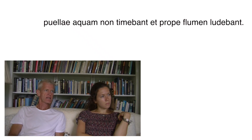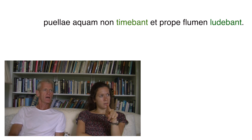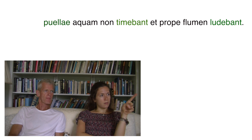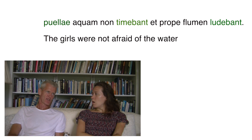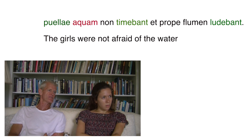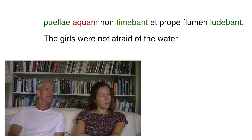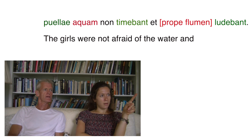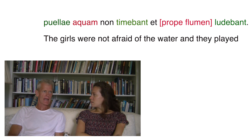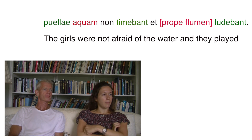'Puellae aquam non timebant, et prope flumen ludebant.' The verbs are 'non timebant' and 'ludebant.' 'Timeo' means 'I fear,' so 'aquam' is accusative after it. The girls were not scared of the water. Then 'et' and 'prope' — prope means near, not through — so they played near the river. The girls were not scared of the water and they played near the river.